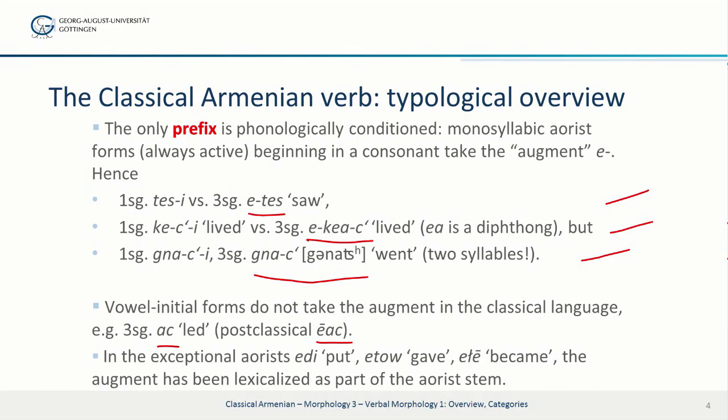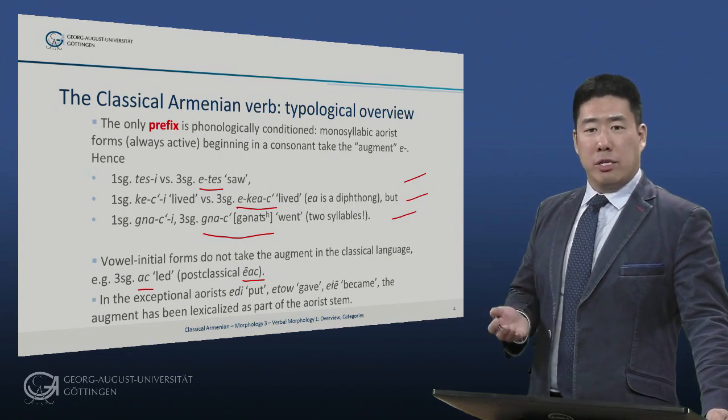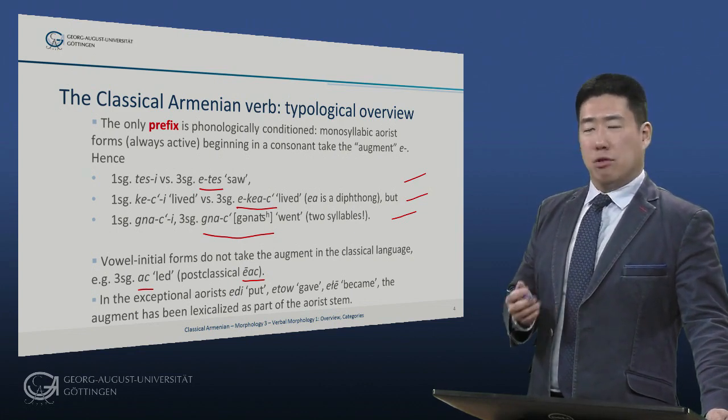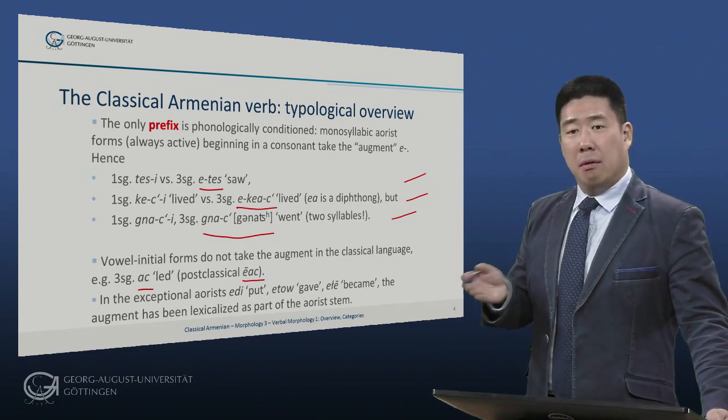There are, from a diachronic point of view, exceptional aorists: edi (put), etu (gave), elei (became). But the augment in these aorists has been lexicalized — it has been analyzed as simply part of the aorist stem. In synchronic terms in classical Armenian, these aorist stems are simply ed, et, and el.